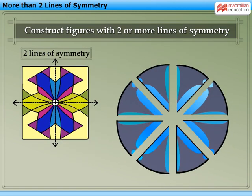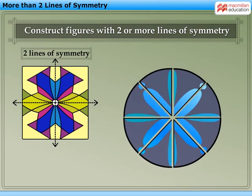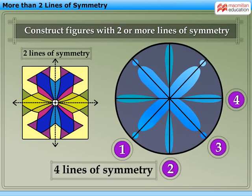In the same way, adding similar pieces, we get this figure having four lines of symmetry.